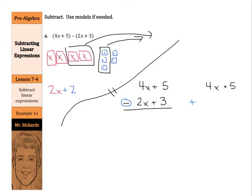In order to change this from subtraction to addition, we need to take the opposite of the 2x and the opposite of a positive 3. So that would change into a negative 2x and a minus 3. And here's the advantage to this. Now we can look and go, all right, 5 plus a negative 3. Well, 5 plus a negative 3 is 2, and it's a positive. And then 4x plus a negative 2x is just 2x. So 2x + 2.